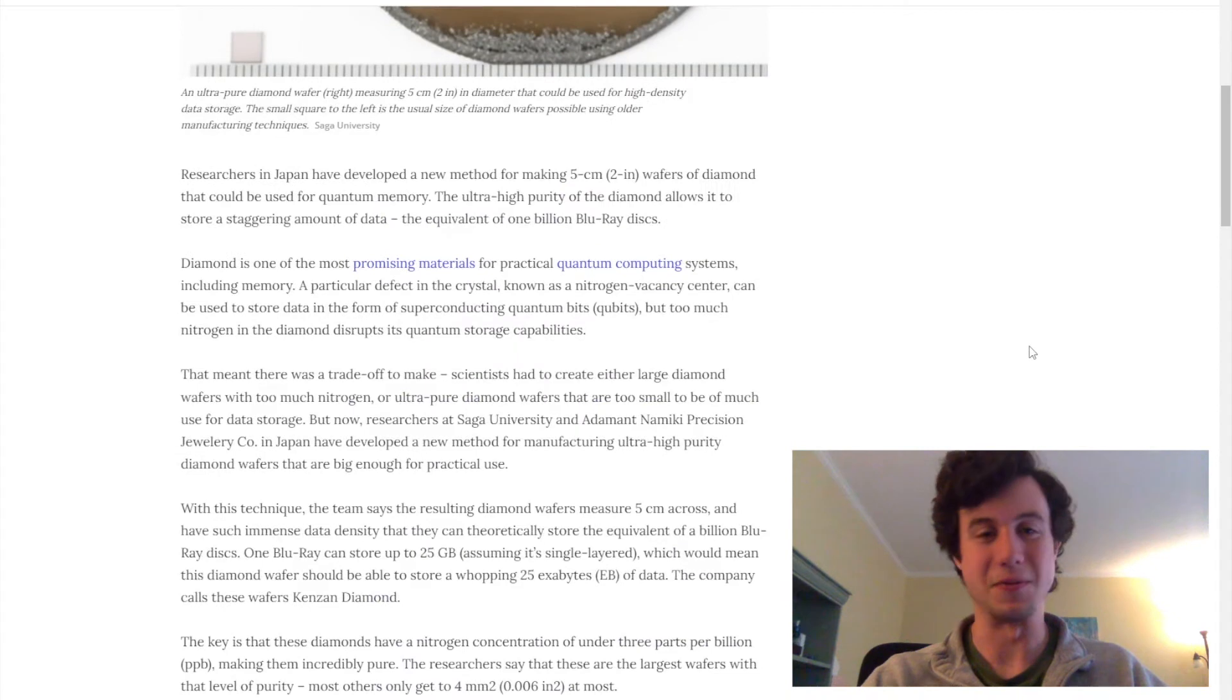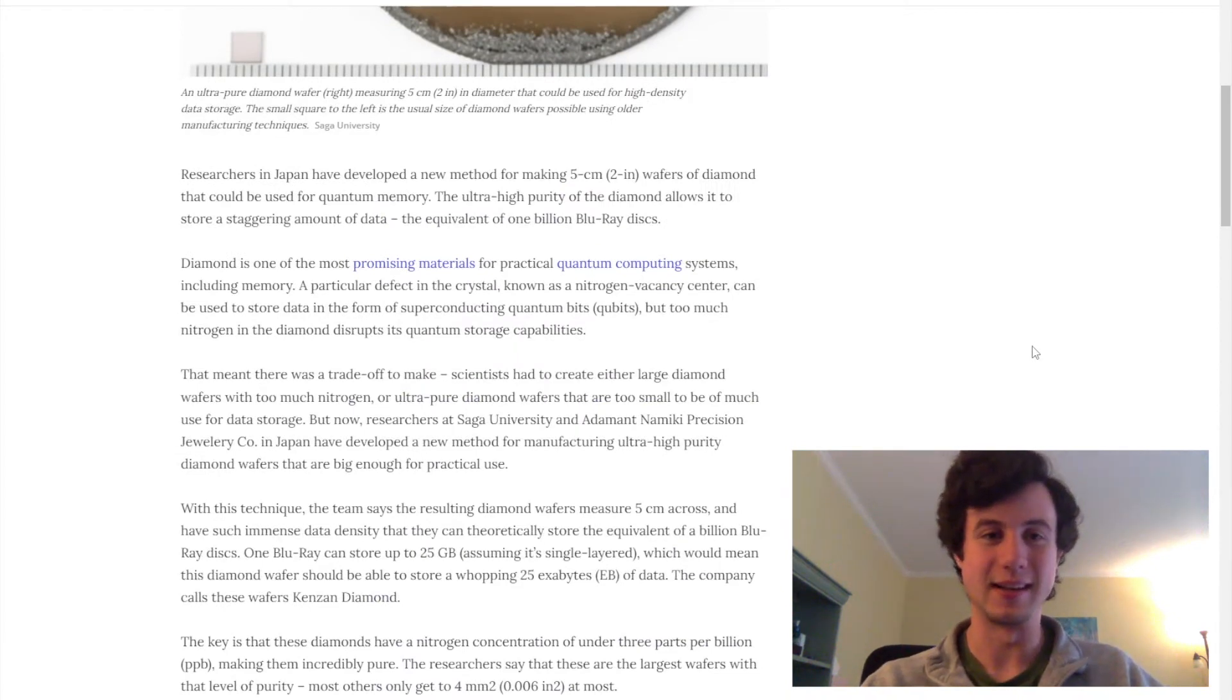So the basic idea of the article: a new manufacturing method has allowed them to make five centimeter wafers of diamond, which in the past they've only been able to make much smaller diamond wafers, at least of the high purity that they need for quantum storage.